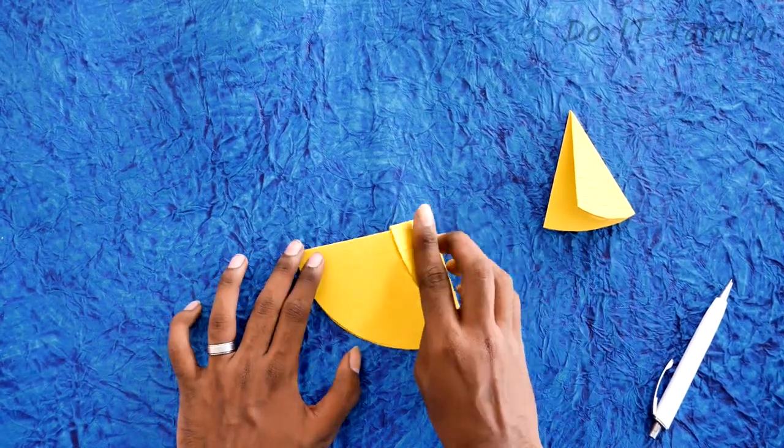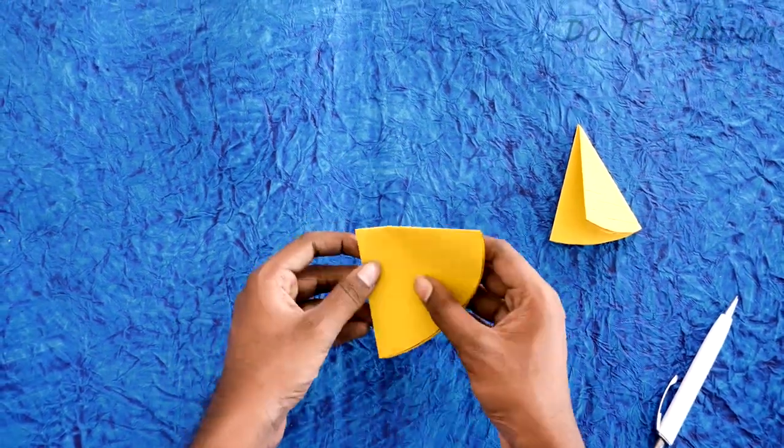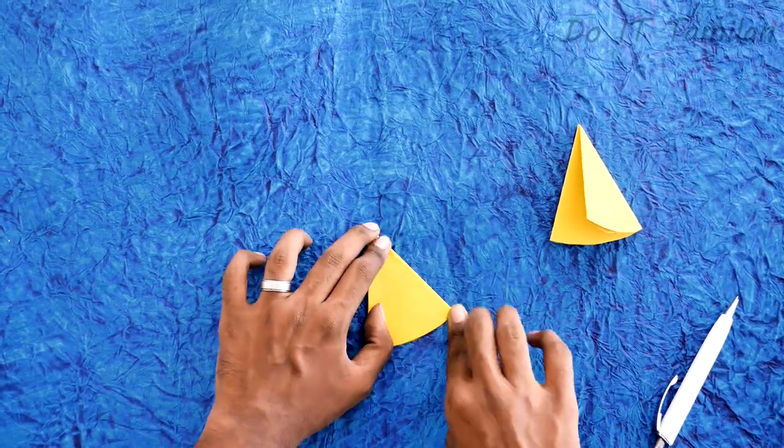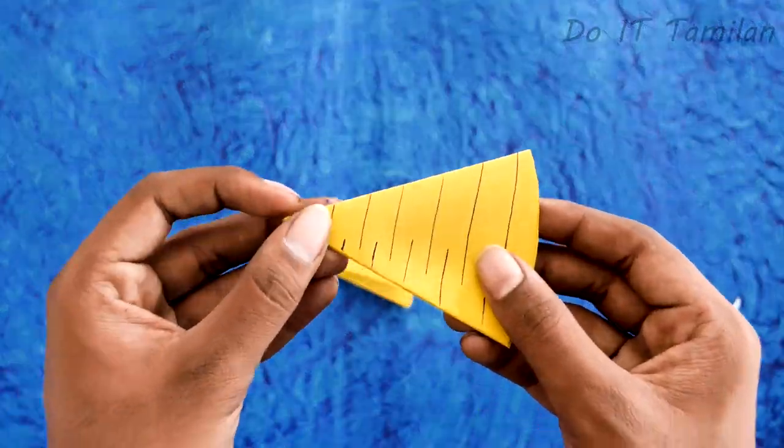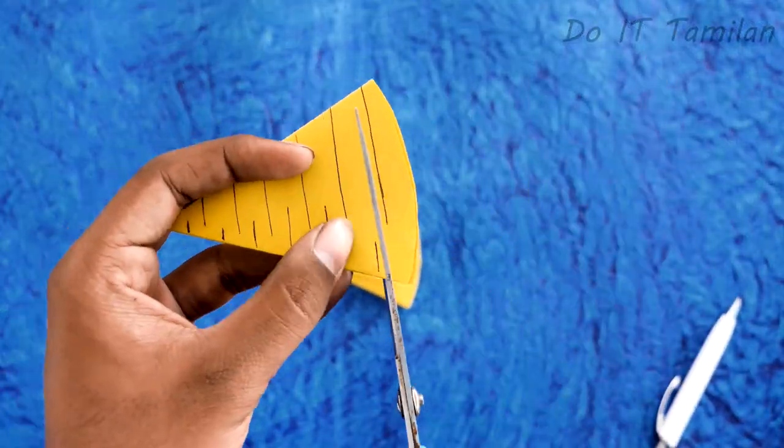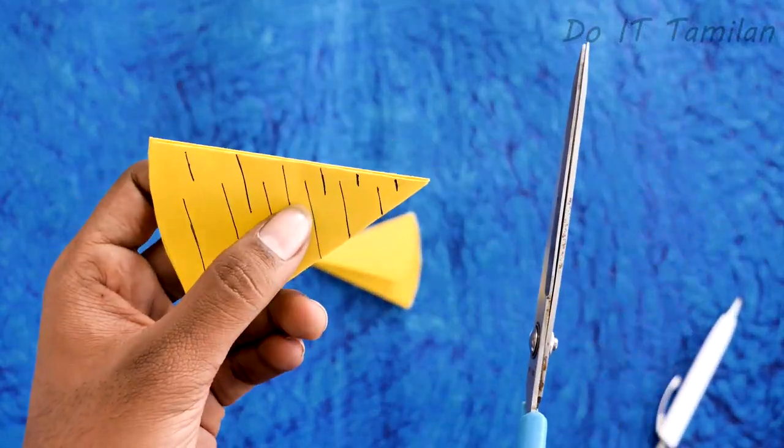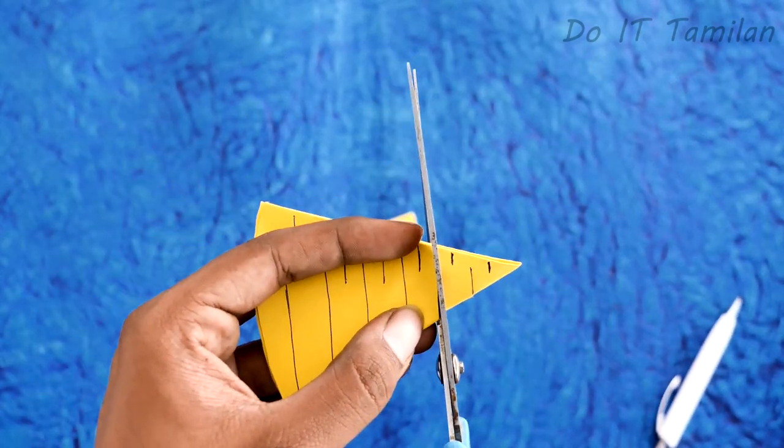And the next part, we are going to cut two round shapes. Then we will cut. In the previous process we have to mark the paper. If you want to mark it, we will cut the paper correctly.